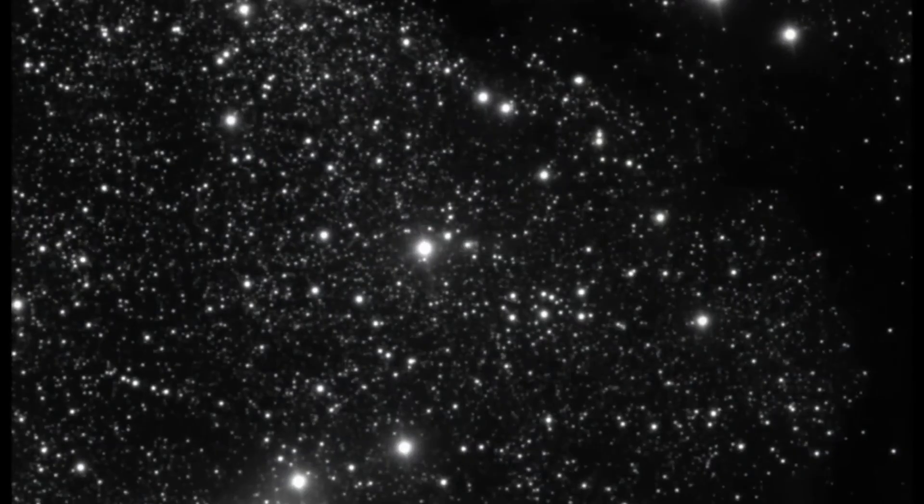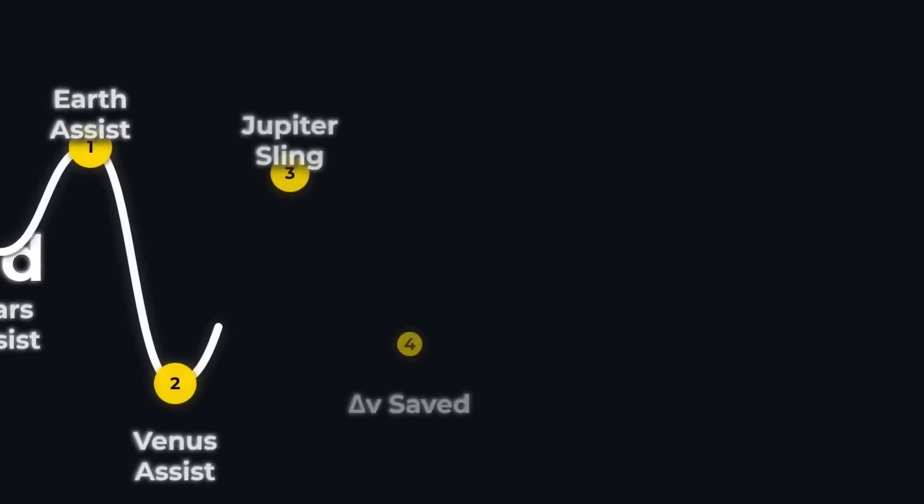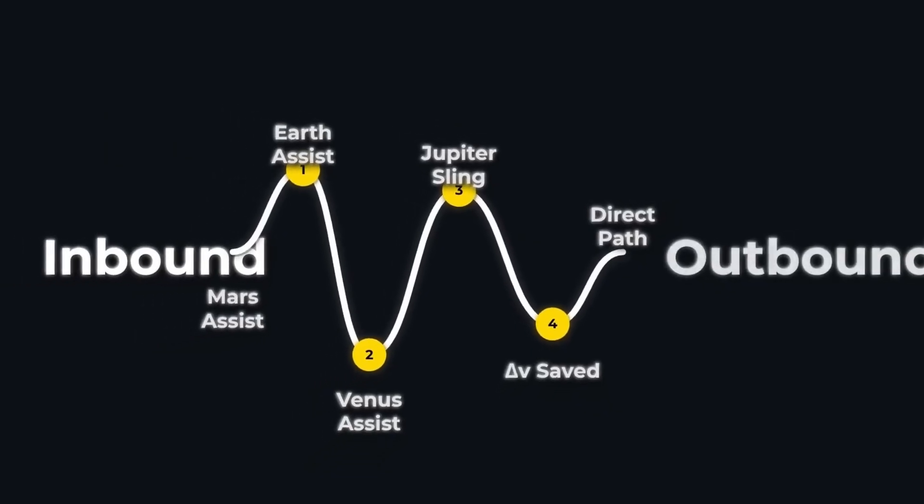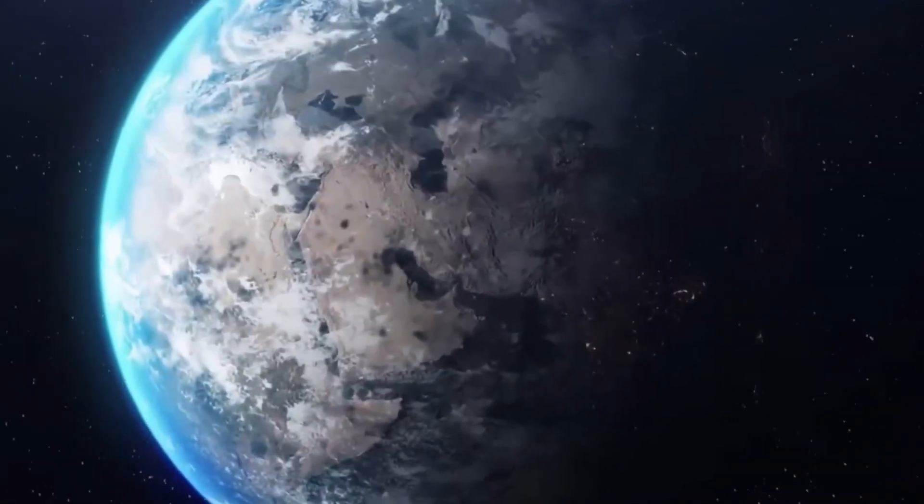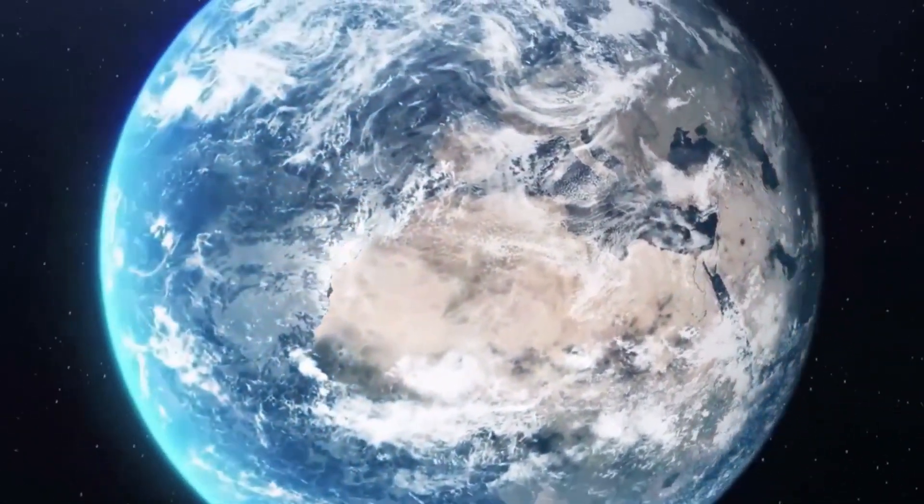For some, this alignment hints at reconnaissance—a deliberate pattern optimized for observation. For others, it is simply a statistical miracle. Avi Loeb's argument gains its sharpest edge here: the flyby sequence—Mars, Earth, Venus, Jupiter—isn't just rare, it's geometrically efficient.